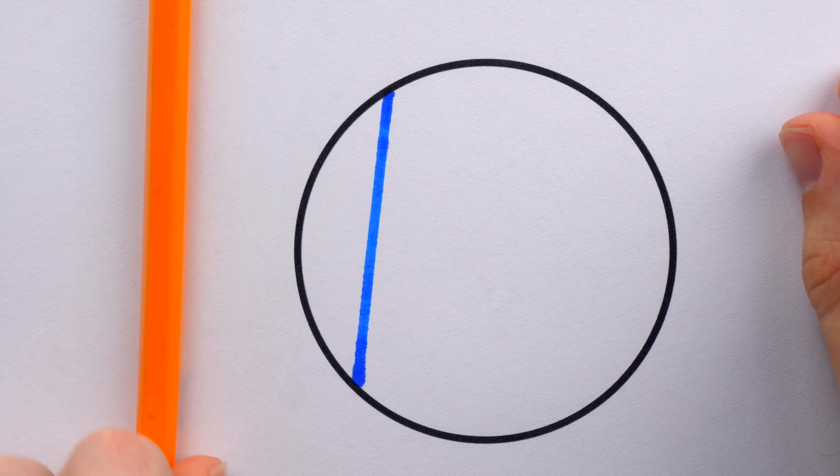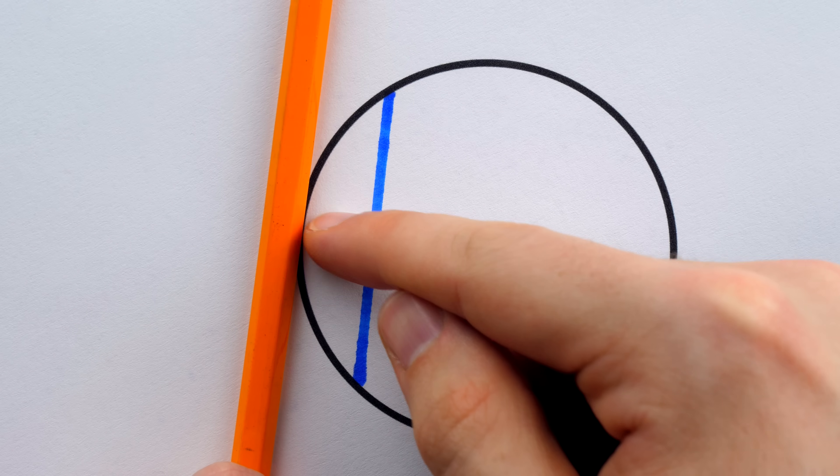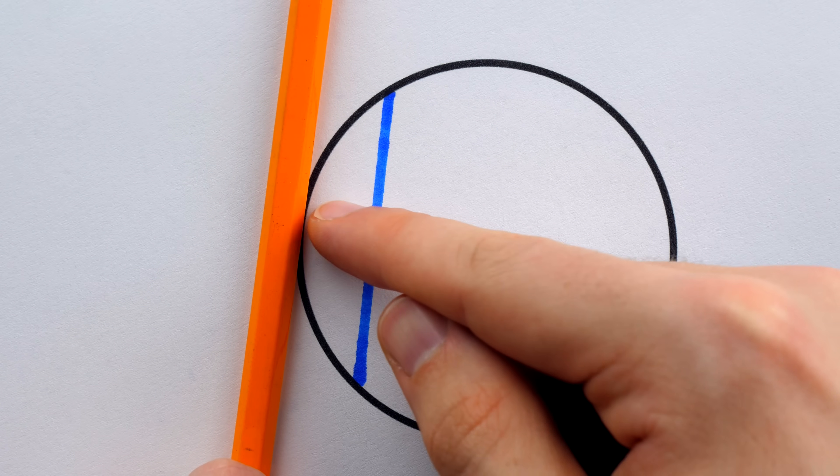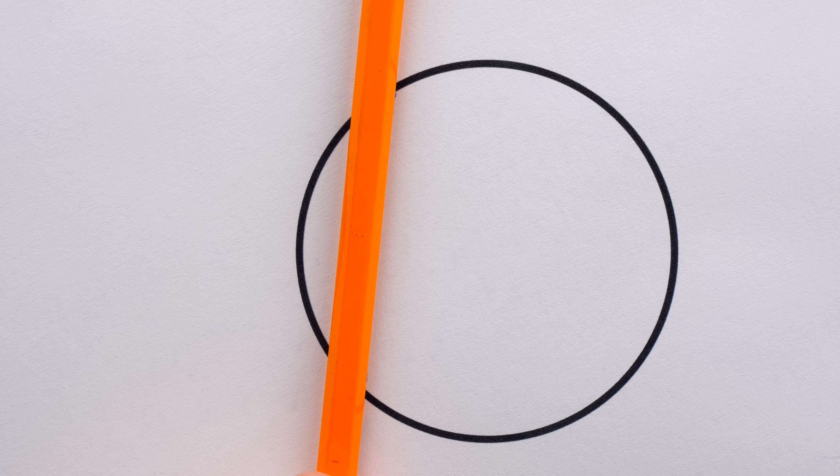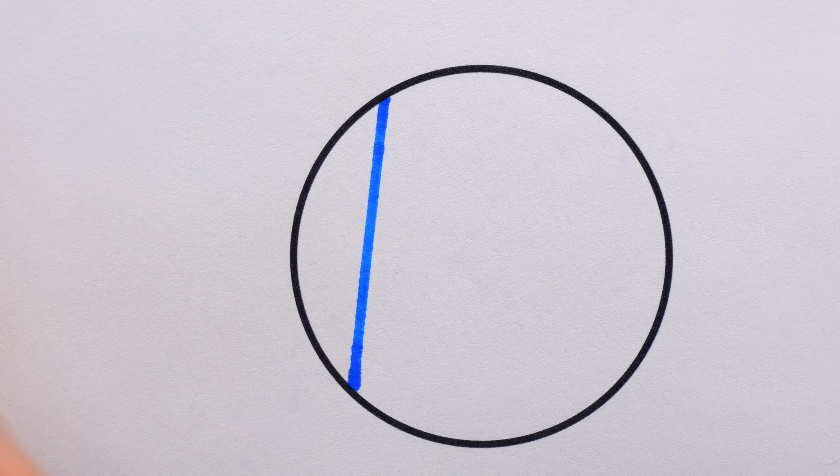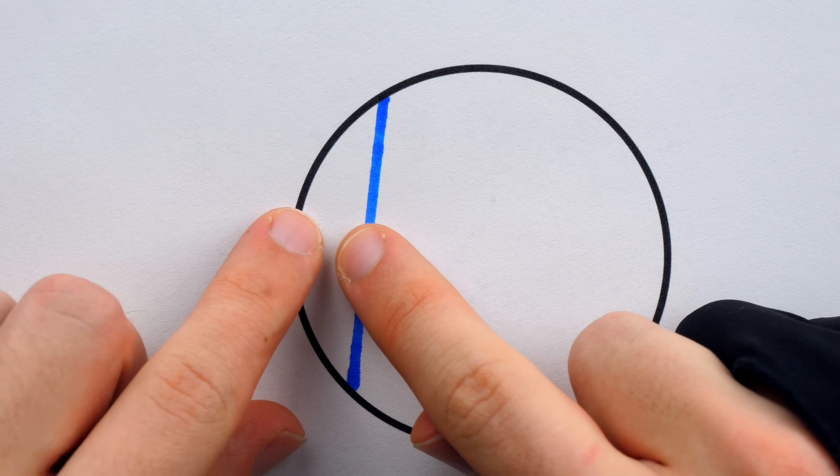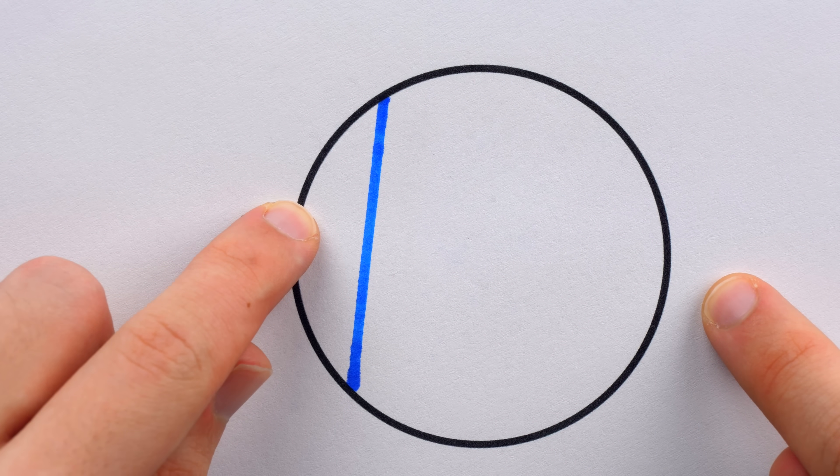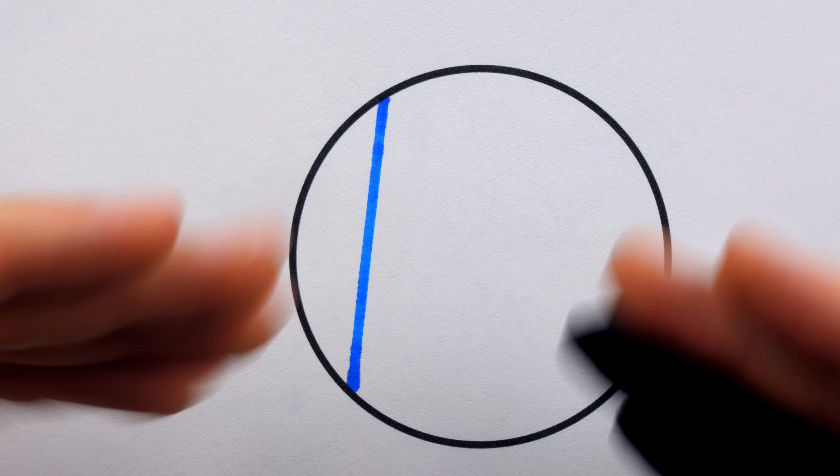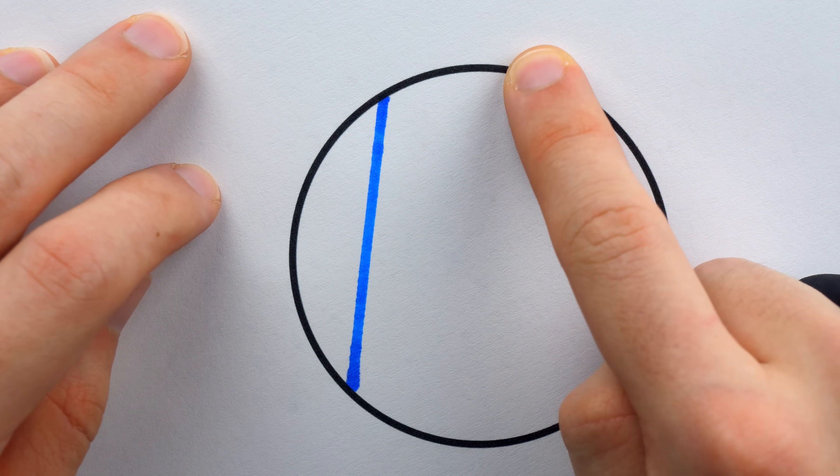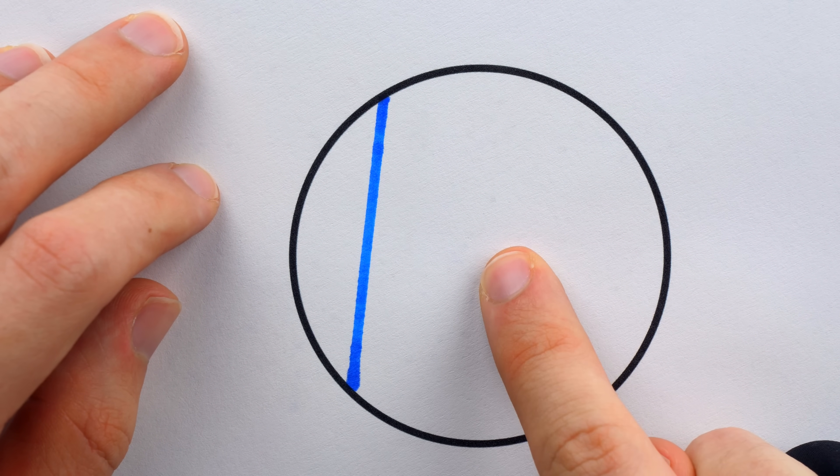Now again, I know that if there was a tangent to the circle over here, the radius would intersect it perpendicularly. So I'm imagining that this chord is like that tangent line brought inside of the circle. And now, if we can construct a segment which bisects this chord at a right angle, that segment will pass through the center. We could then extend the segment to get a diameter of the circle, and then repeat that process to get another diameter, which necessarily would intersect the first one at the center of the circle.